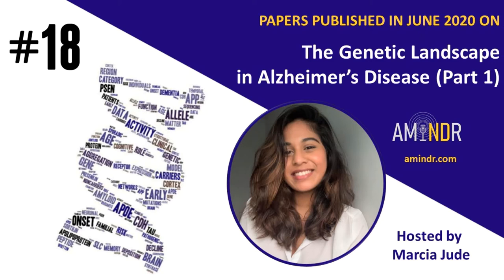Next, you will hear about the variants specific to autosomal dominant AD versus sporadic AD. The paper is titled Amyloid, Tau, and Astrocyte Pathology in Autosomal Dominant Alzheimer's Disease Variants, ABP PARC and PSEN1DE9. It was published in the journal Molecular Psychiatry and was written by first author Lemoyne and last author Nordberg.